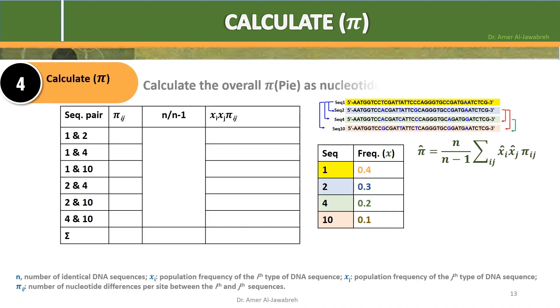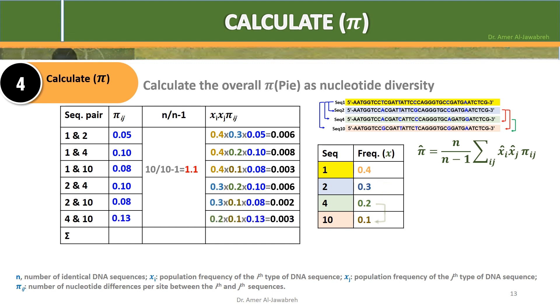Step 4: Calculate pi i j as a nucleotide diversity. To the previous table, add 2 columns: 1 for n over n minus 1, and 1 for x i x j pi i j. N over n minus 1 equals 10 sequences over 10 minus 1, equals 1.1. To calculate x i x j pi i j for the first pair of sequences, sequence 1 and 2, refer to the small table where x for sequence 1 is 0.4 times 0.3 for sequence 2, times 0.05 for pi i j column in the big table, equaling 0.06.